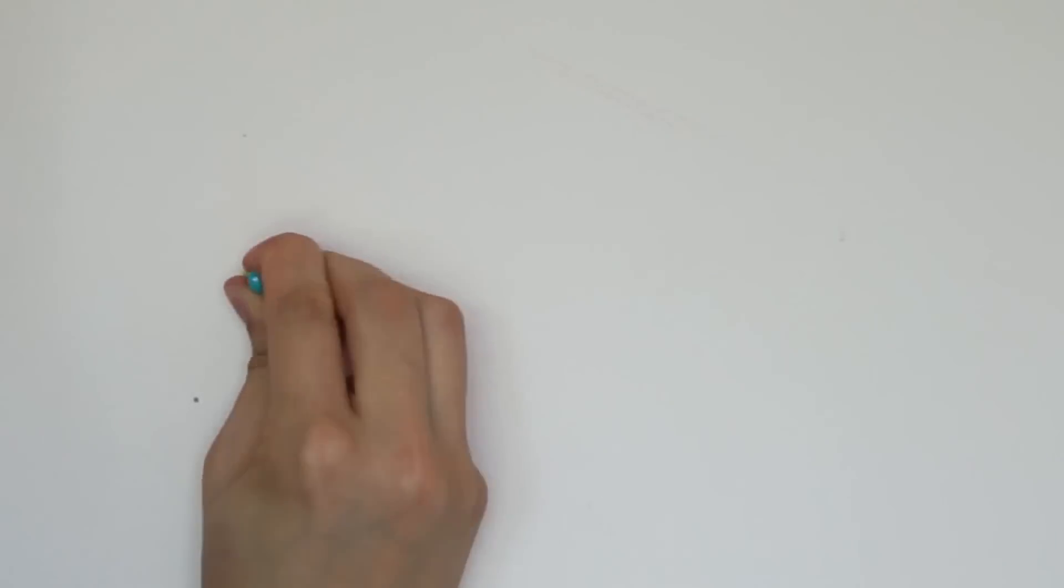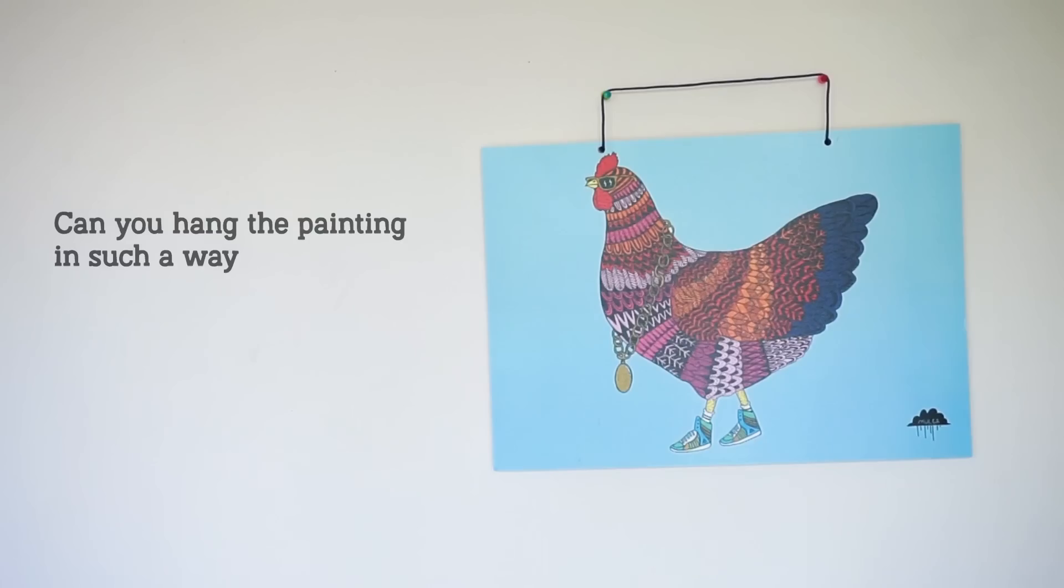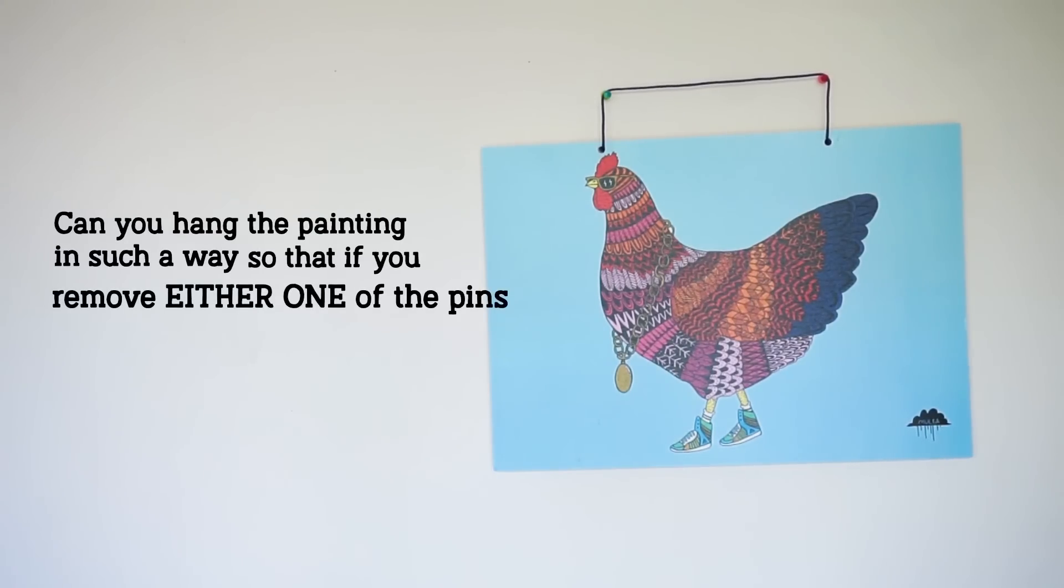Here's a puzzle for you. You have a painting, a piece of string and two pins stuck in a wall. Can you hang the painting in such a way so that if you remove either one of the pins, the painting falls?